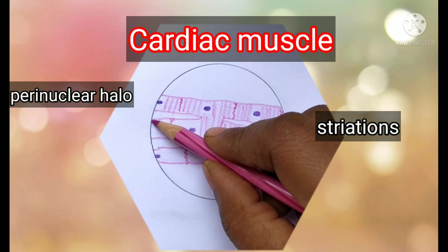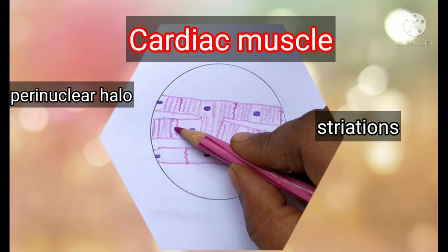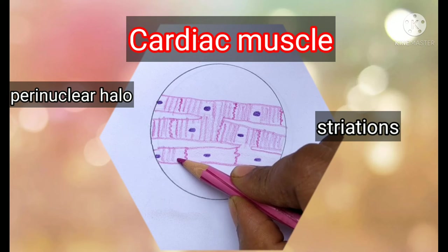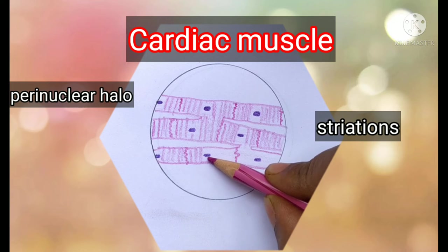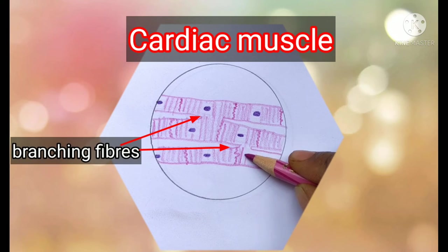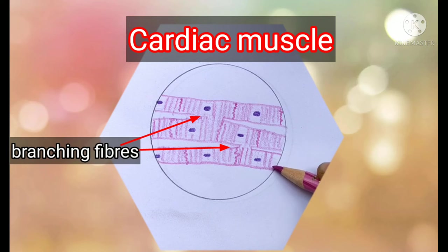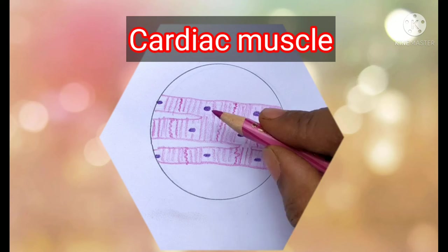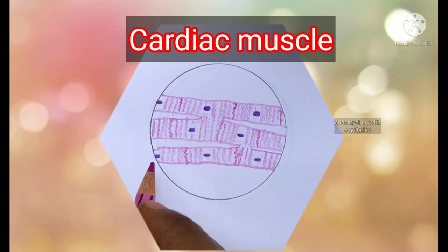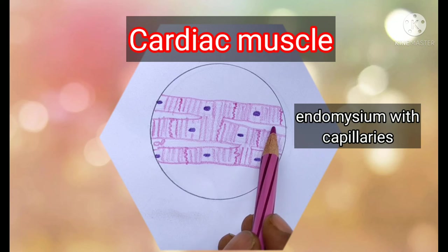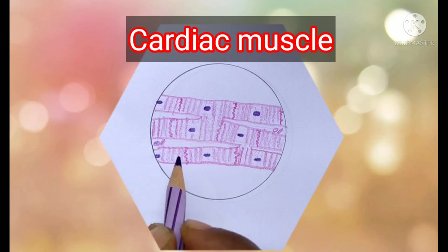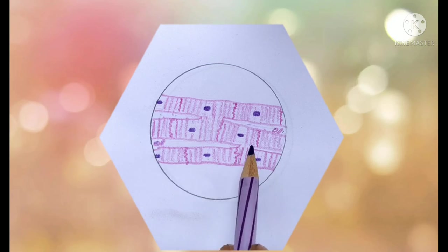Each cardiac muscle cell has a single nucleus — that is the key identification feature. The key features of cardiac muscle are: single nucleus, branching pattern, perinuclear halo, and intercalated disc. The coverings include the endomysium between muscle fibers, and the perimysium surrounding one fascicle.